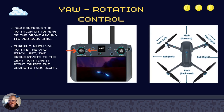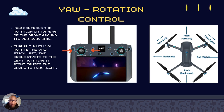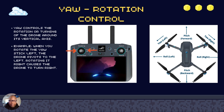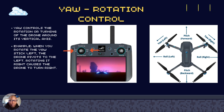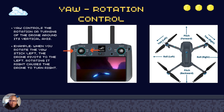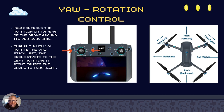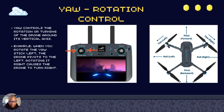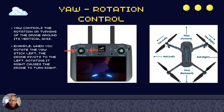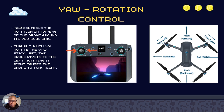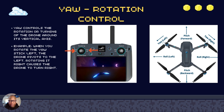Yaw. Yaw is like the rotation of the drone — it moves the drone around its vertical axis. When you rotate the yaw on the left stick, it pivots the drone to the left. If you rotate it to the right, it pivots the drone to the right. So the left thumb stick can move the drone up and down, left and right, and the diagram shows you yaw left and yaw right.